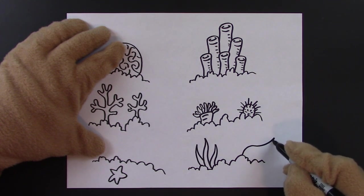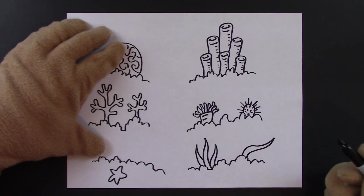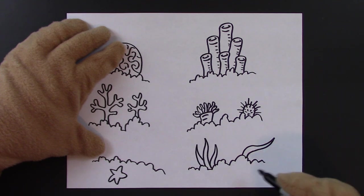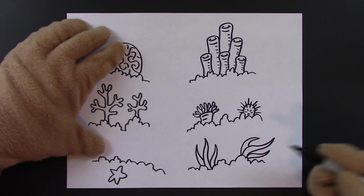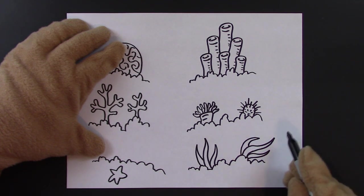Now let's do some seaweed that's blowing in the current. See how he's leaning over. I'll make another one here. And one more up here. See how it looks like he's blowing in the current?